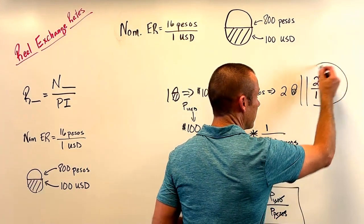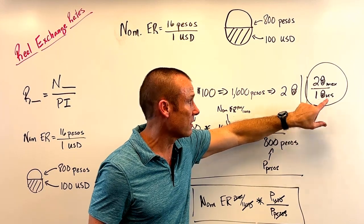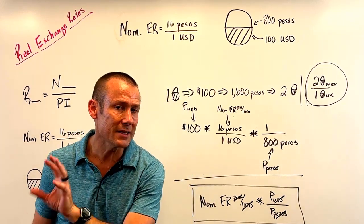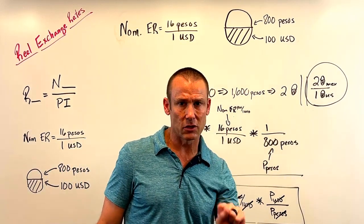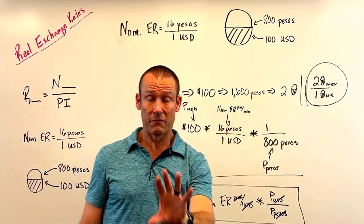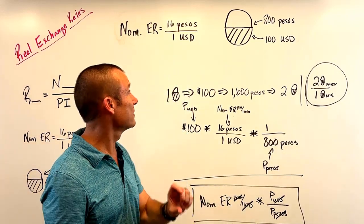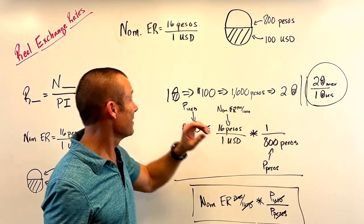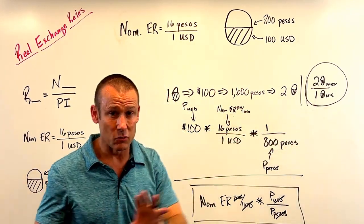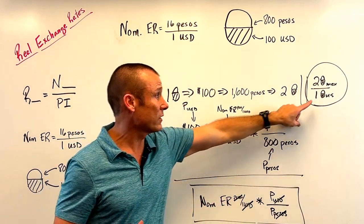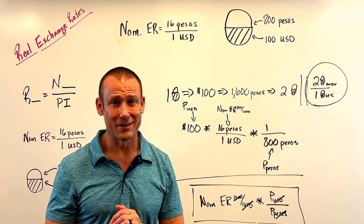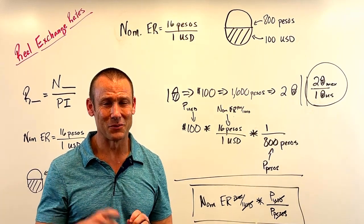What we're left with is two market baskets over one market basket — no pesos, no USD. That's the definition of real exchange rates: the rate at which we exchange goods and services for goods and services. How I think about it: it tells me what I'm really getting when I go to the exchange market. I'm not getting 16 times my value — I'm getting twice my value in real terms. If the real exchange rate is two to one, I'm getting twice the purchasing power. Watch it twice and you'll own this concept.